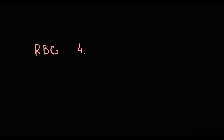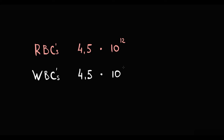Why is an increase in red blood cells so dangerous? First of all, red blood cells constitute 99% of all cells in the blood. If we compare the normal value of red blood cells — about 4.5 × 10¹² — and the normal value of white blood cells — about 4.5 × 10⁹ — we see that the amount of red blood cells is 1,000 times higher compared to white blood cells or any other cell in the blood.